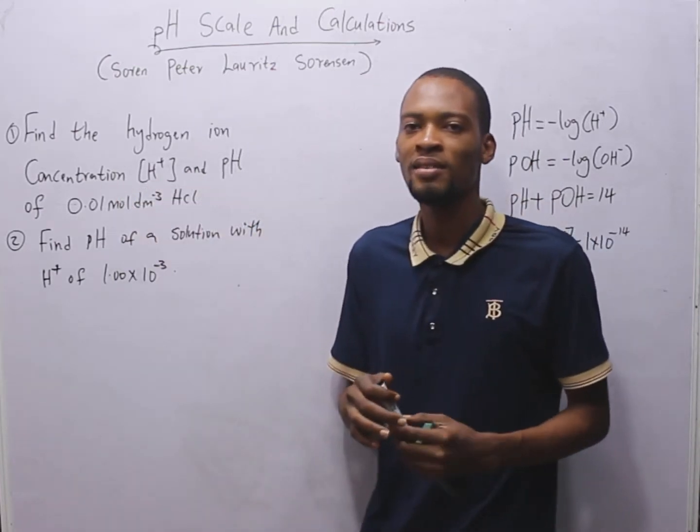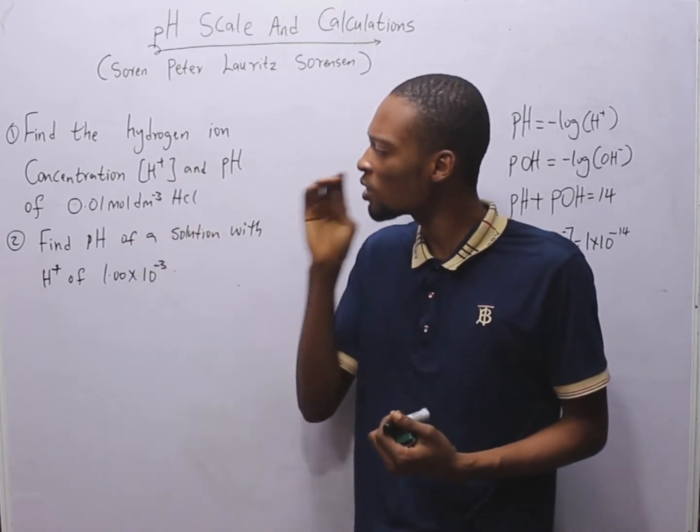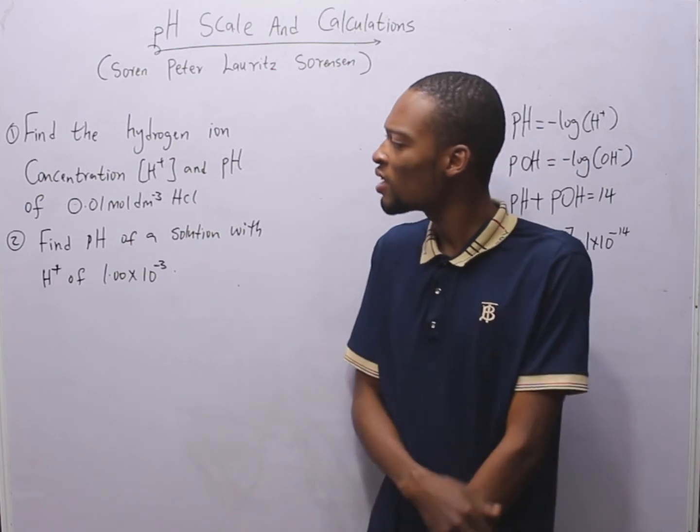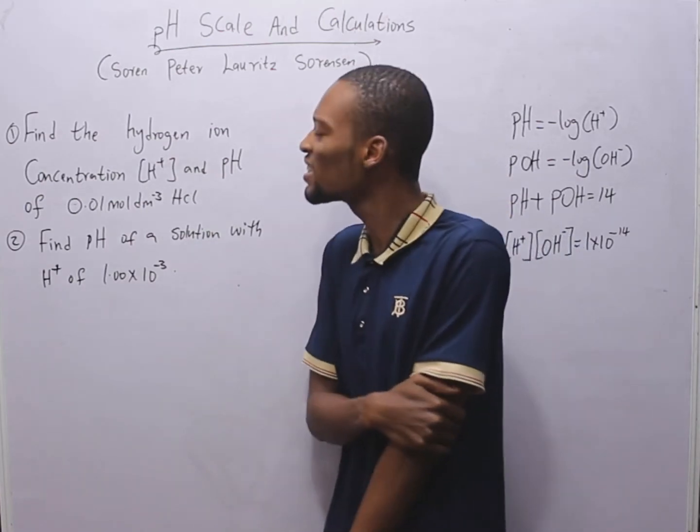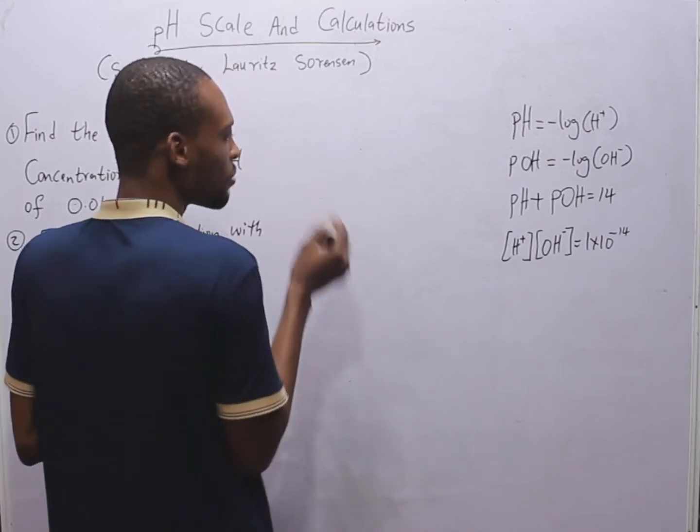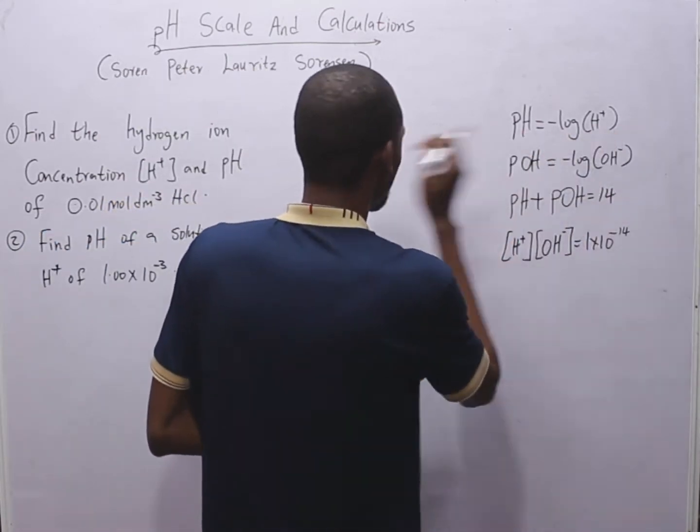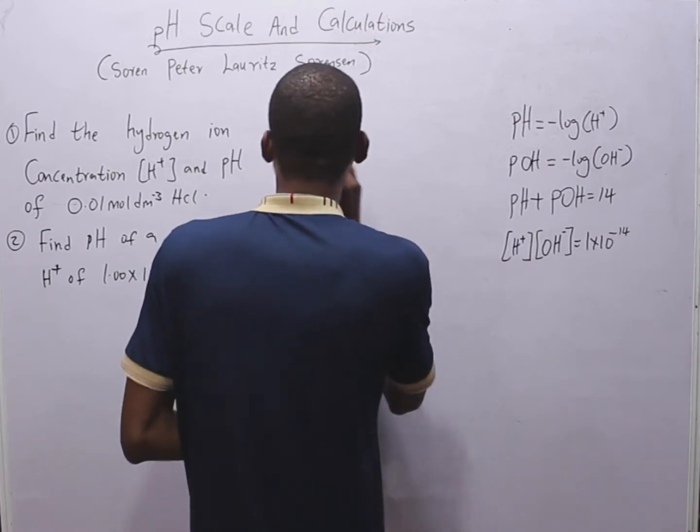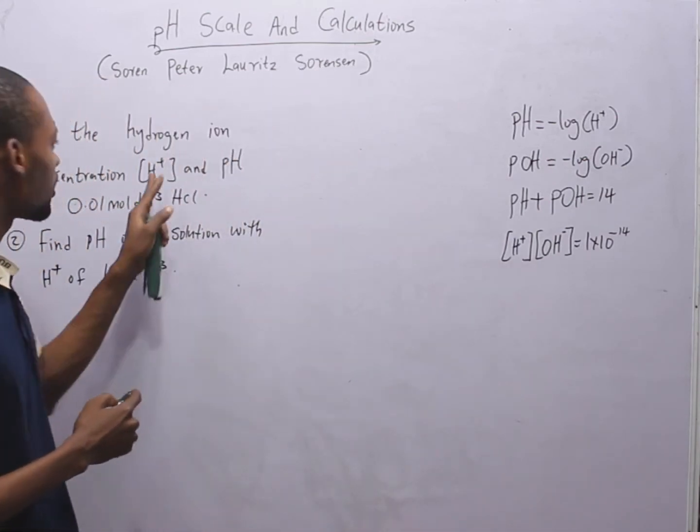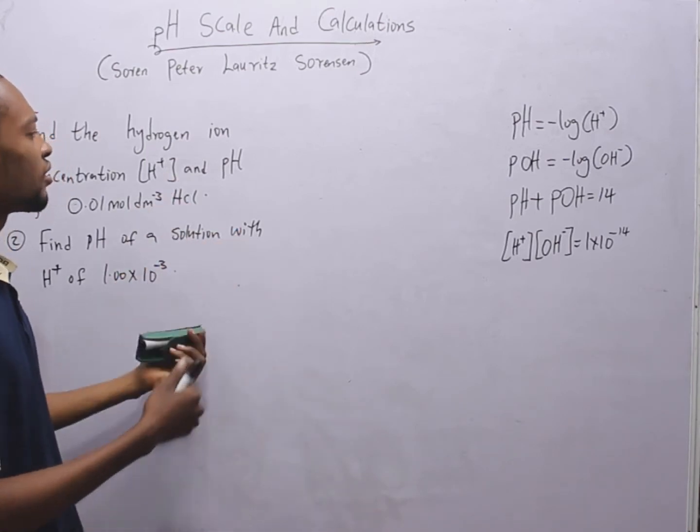Look at question number one. It says, find the hydrogen ion concentration, H plus, and pH of 0.01 mol per dm cube of HCl. Remember from here, pH is negative log of hydrogen ion. Now, are we given the hydrogen ion H plus? No.